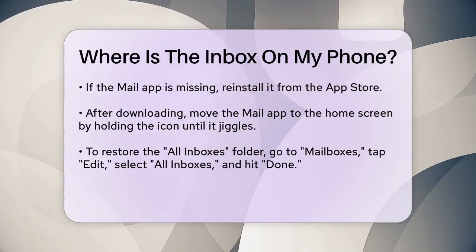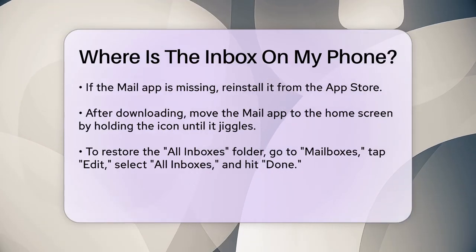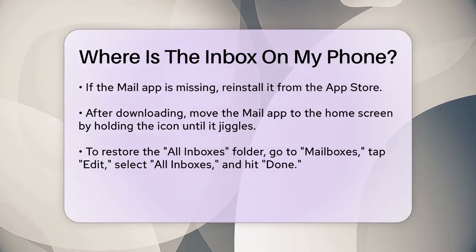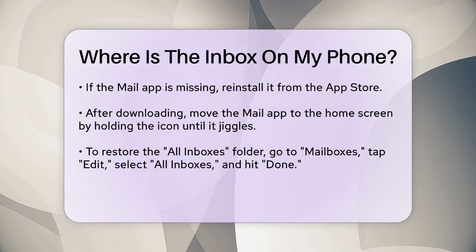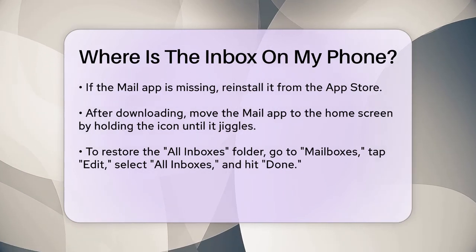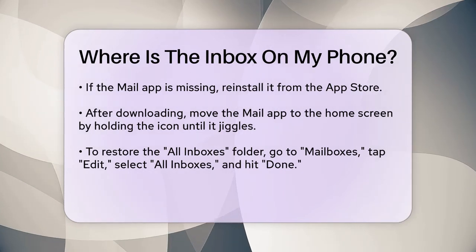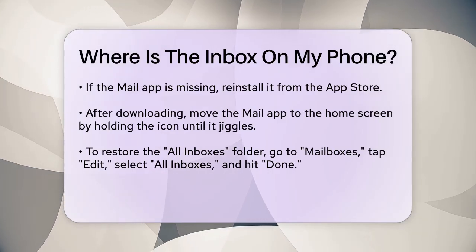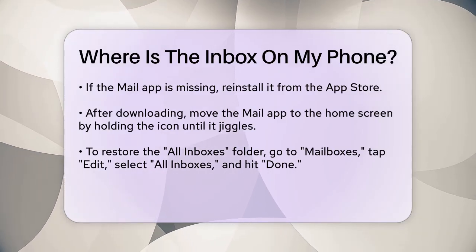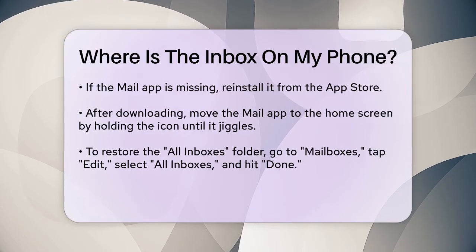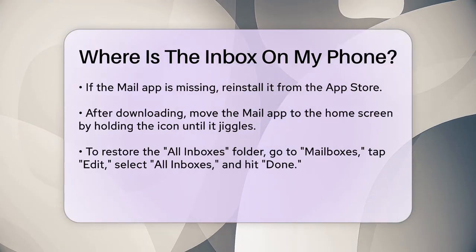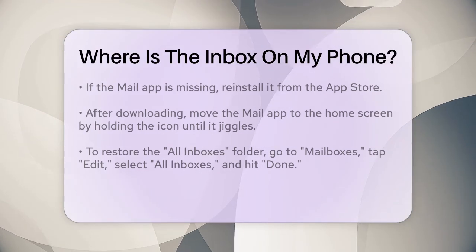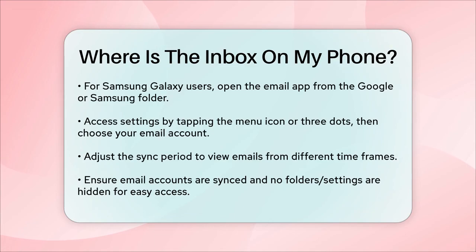On a Samsung Galaxy device, finding your inbox is straightforward. Open the Email app, which can be found in the Google or Samsung folder. Tap the menu icon or the three dots, then select Settings. Here, choose the email account you want to adjust, and you'll see your inbox. You can also change the sync period to display emails from the last few weeks, months, or all time.